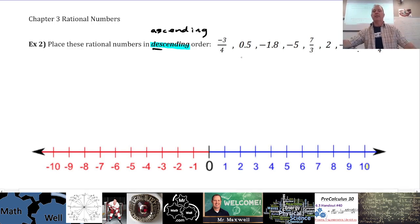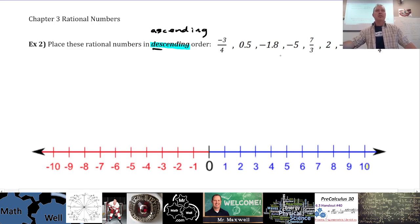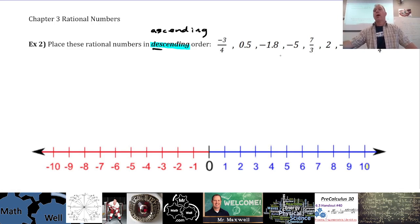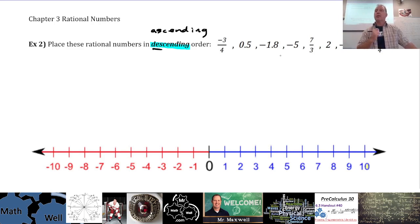So how do we go ahead and tackle this? How do we find out which one is bigger than the other? You can either put them all into decimals or build them up into fractions. So you could write all of them as decimals — we can use a calculator for this — or you could build them up into fractions.